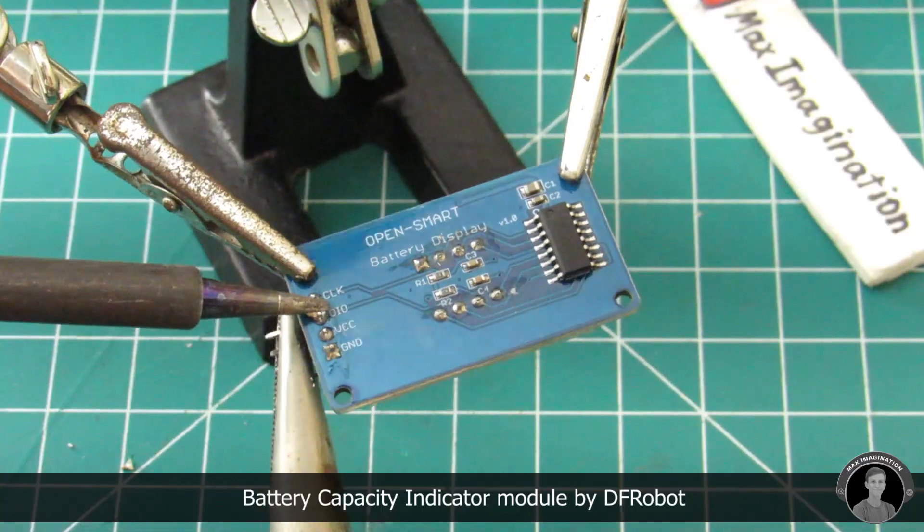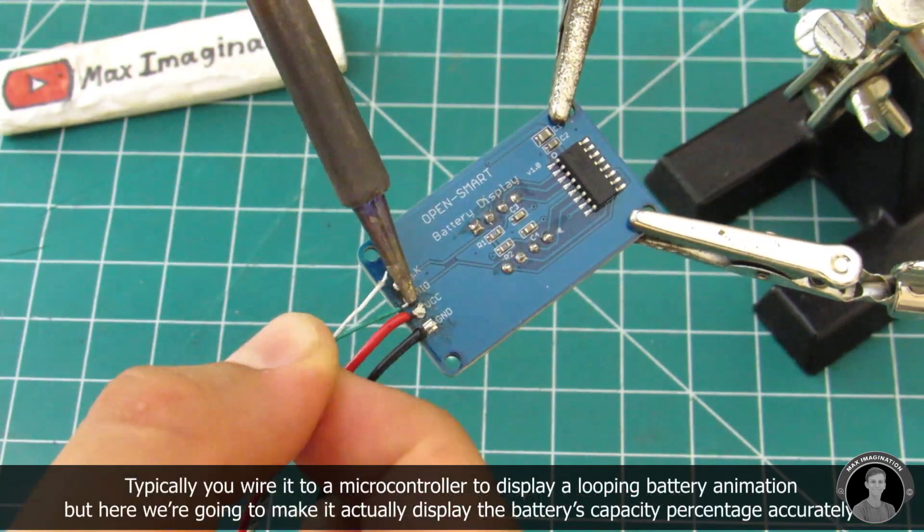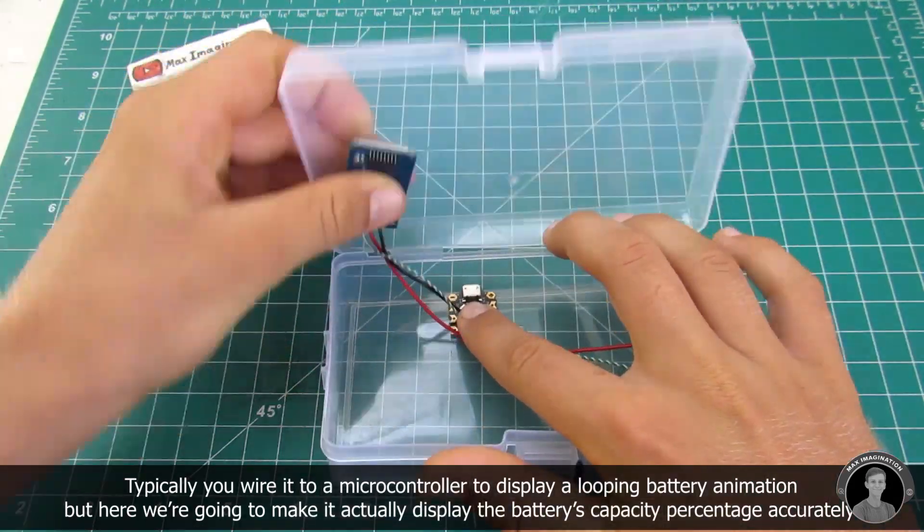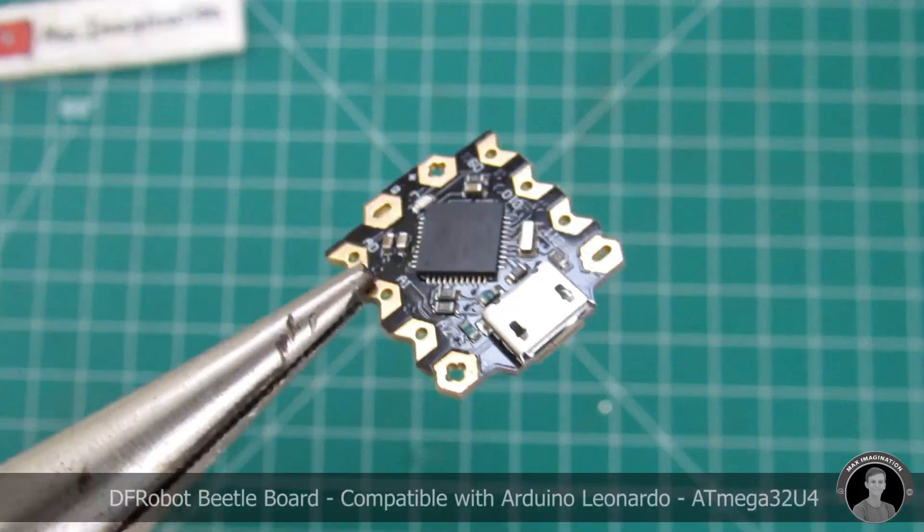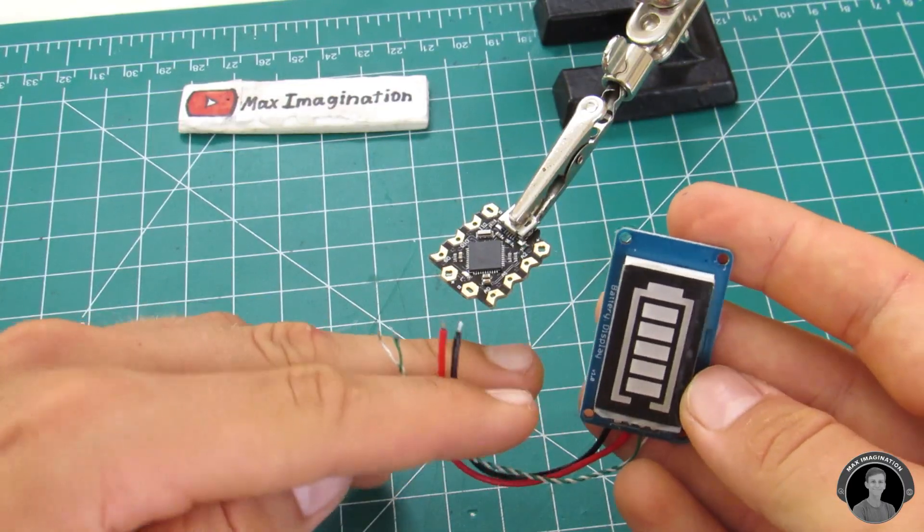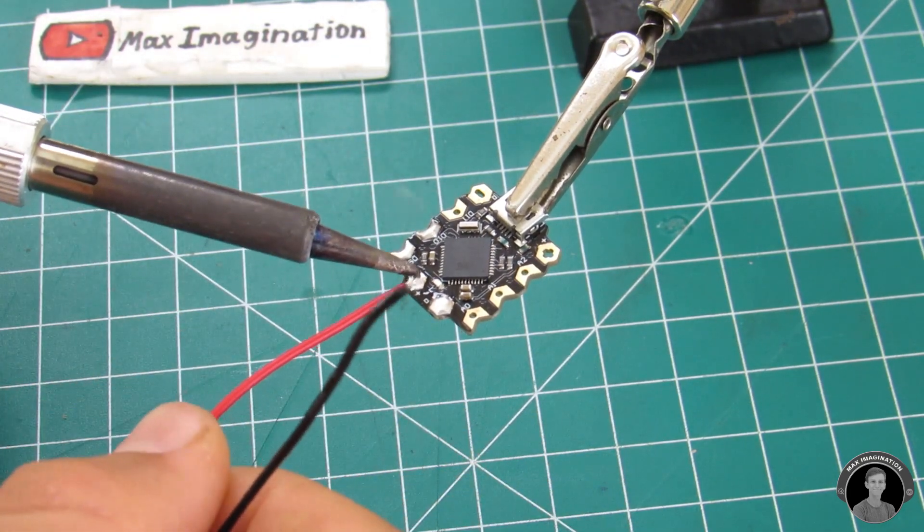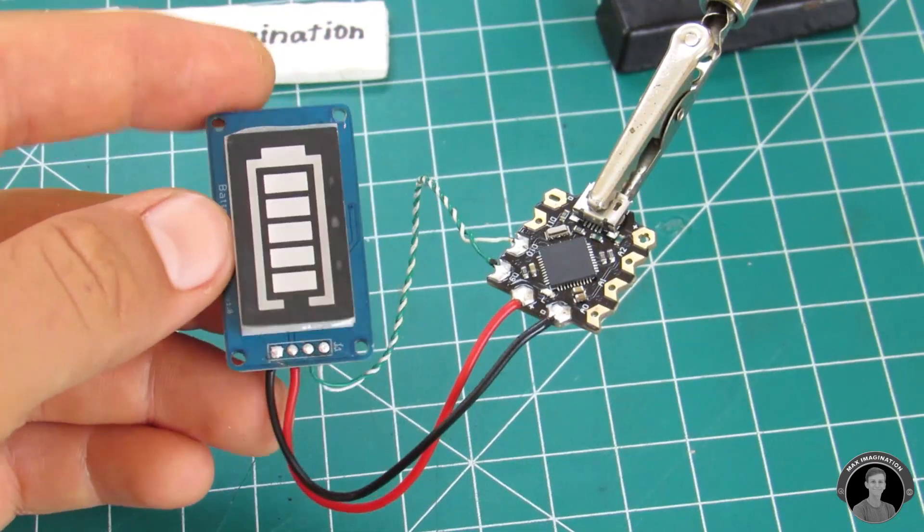Next let's wire up this battery capacity animation display. So we kind of want the two modules, the battery indicator and the push button to sit like this.